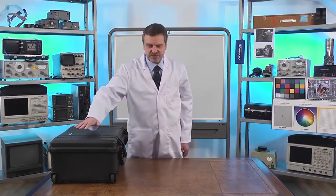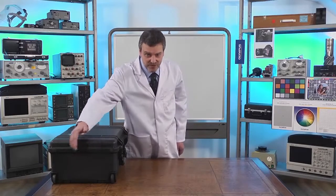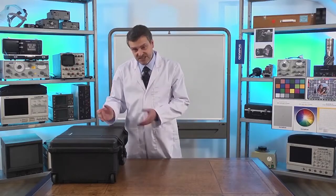When you receive your iSpeed 3, it will come in one of these, a tough and rugged Peli case with wheels and a towing handle so you can move it around easily. Let's look inside.